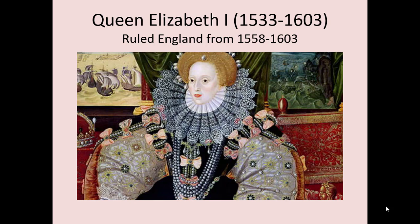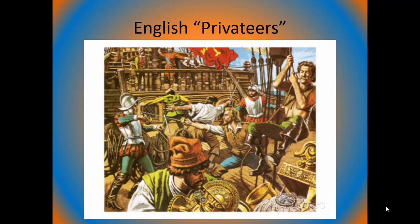As tensions increased, Elizabeth decided to instigate. She encouraged the activities of English privateers to raid Philip's ships as they made their way from the New World — of course, these ships sat low in the water because they were full of gold. Elizabeth saw this wealth coming back to Spain and hired privateers to go and raid these ships.